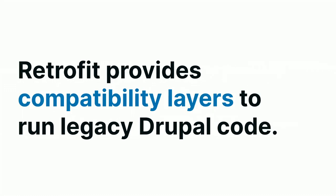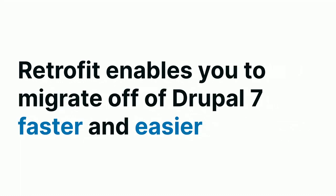We should stop saying version numbers — it's just Drupal now. Legacy Drupal is everything before 8, before the modern Symfony base of the platform. By giving you this compatibility layer, it enables you to migrate off Drupal 7 faster and easier, because you're not rewriting every line of code. You're essentially copying and pasting the module, verifying it works, and tweaking where you need to.